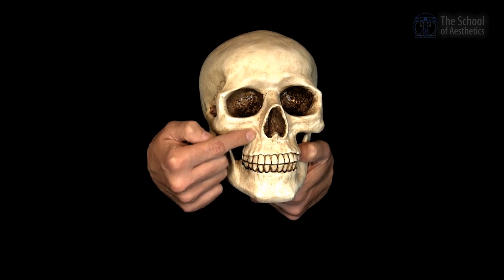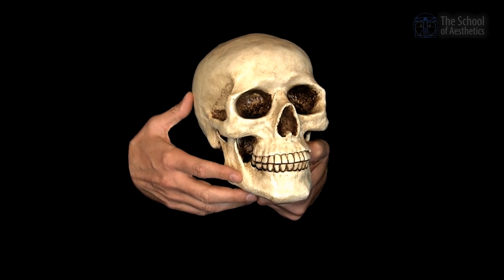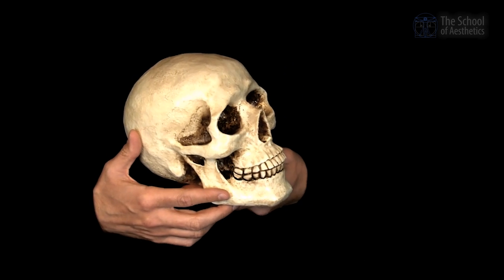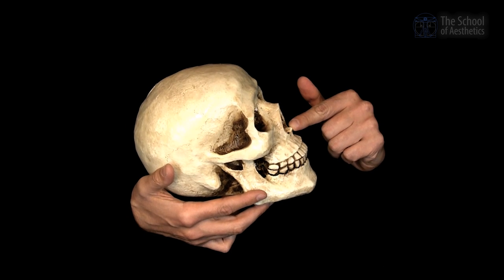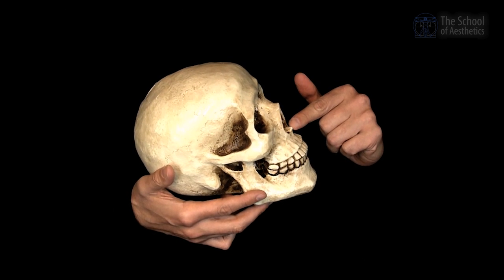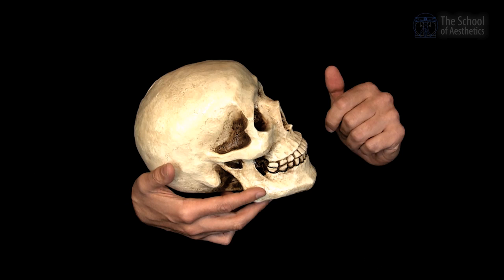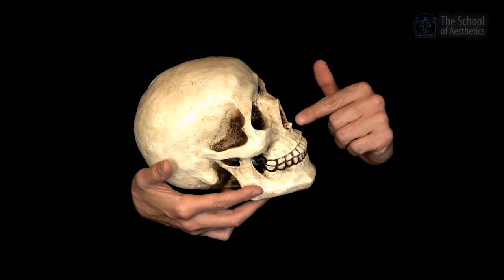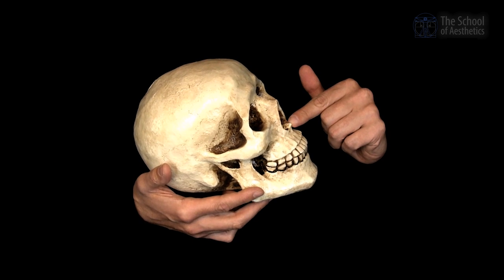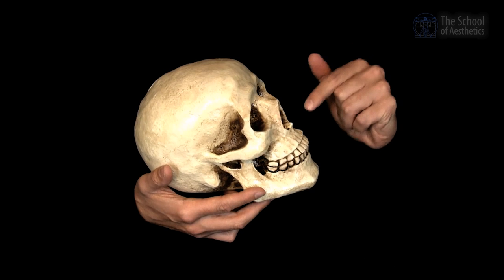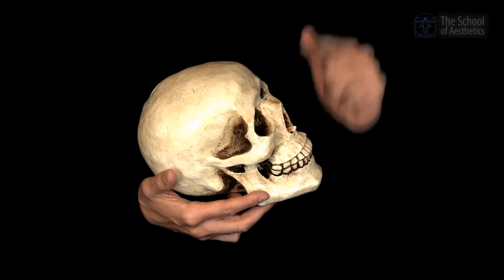The cheekbone area and canine fossa are two areas where volume requirements are bigger. When getting into nose reshaping, the anterior nasal spine is very important. Patients who present an evident anterior nasal spine will have lifting of the tip of the nose done much more easily. In Asians and those patients who do not have such an evident protuberance at the anterior nasal spine level will require much more product to lift the tip of the nose.